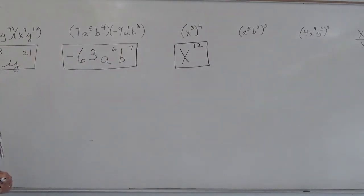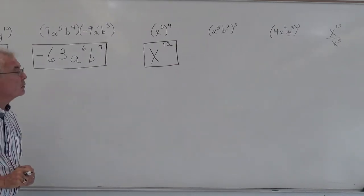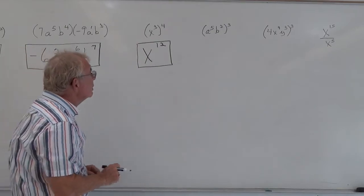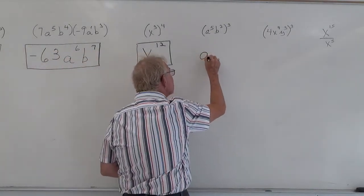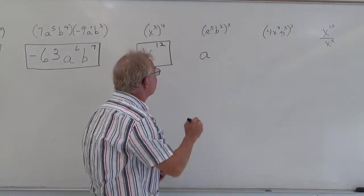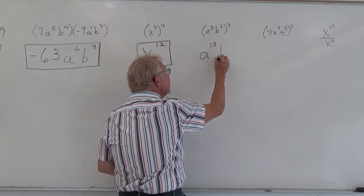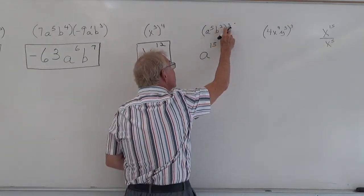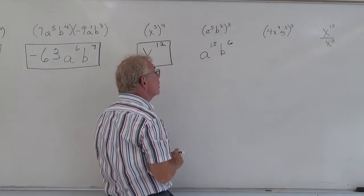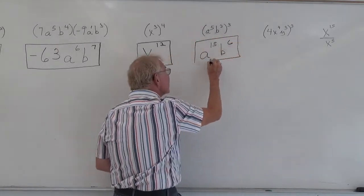Moving to our next example. It's a power rule again, but this time we have two variables. We have an A and we have a B. So we take the A, and our rule states that we multiply the 5 times 3, and we get A to the 15th. Then we look at base B. You have 2 times 3, which is 6. So our answer is A to the 15th, B to the 6th.